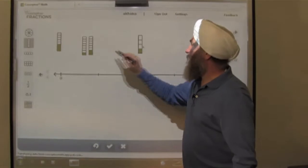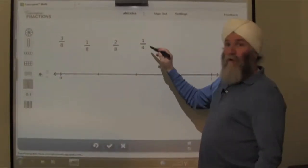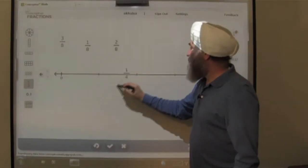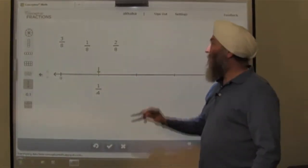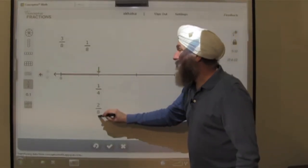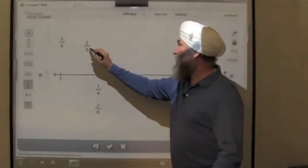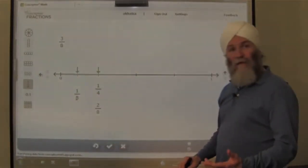So let's do some more with this. So the 1 fourth, we know where that goes, right there on 1 fourth. The 2 eighths, we know where that goes because it's the same as the 1 fourth. It's another name for the 1 fourth. And 1 eighth is half of the 2 eighths, and it goes right about there, right in the middle.